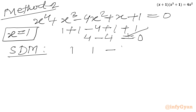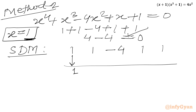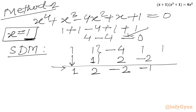The coefficients are 1, 1, -4, 1, 1. The leading term is written as 1. Multiplying the base solution 1 by each result: 1×1 = 1, adding gives 2; 1×2 = 2, adding gives -2; 1×(-2) = -2, adding gives -1; 1×(-1) = -1, and the remainder is 0. These are the coefficients of the resulting cubic equation.